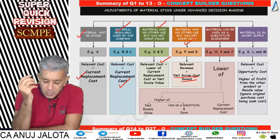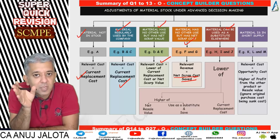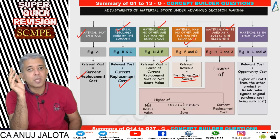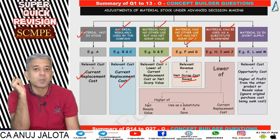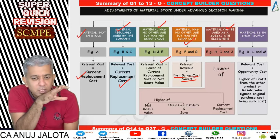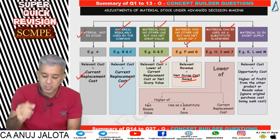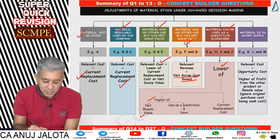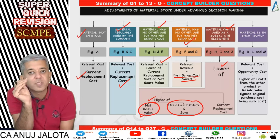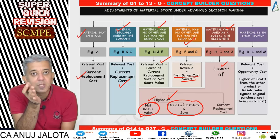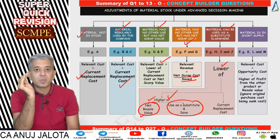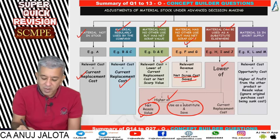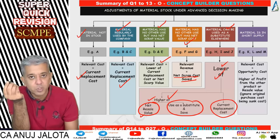We also covered three additional cases where material can be used as a substitute in another one-time job. So the material can be used for this offer, sold, or used in another one-time job. We explained the logic through three questions and converted it into a chart: first, higher of which two figures — if the offer doesn't come, you'd either sell it or use it elsewhere to save money; select whichever of those two is higher. That higher amount then becomes your cost when the offer arrives, because you now require the material.